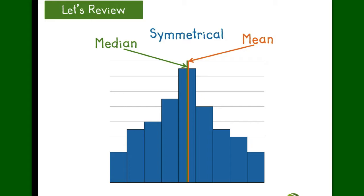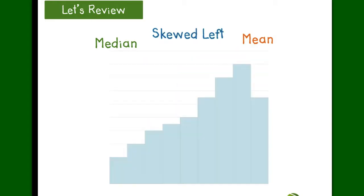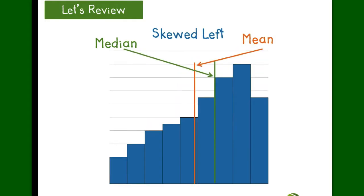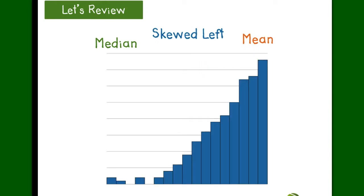When a graph becomes skewed, your mean and median often begin pulling away from each other. Now the longer the tail becomes, the more difference you're going to begin to see in the mean and the median.